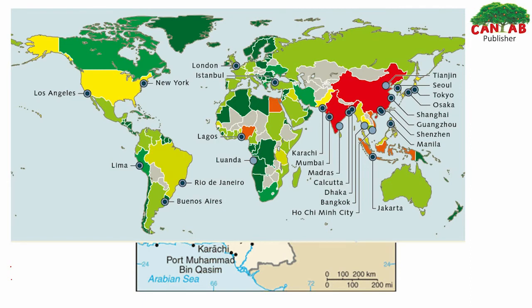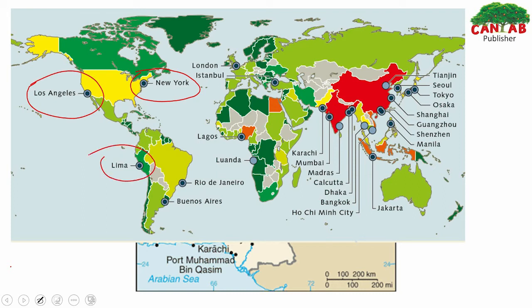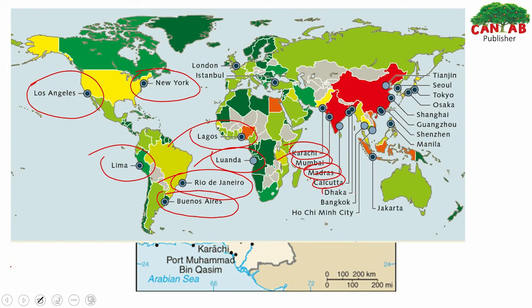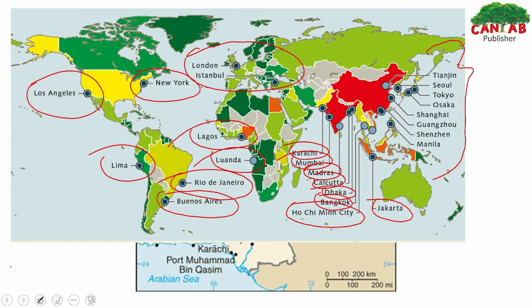On the world map, major ports are depicted: New York Port, Los Angeles Port, Lima Port in South America, Buenos Aires Port, Rio de Janeiro Port, Lagos and Luanda in Africa, Karachi Port in Pakistan, Mumbai and Madras in India, Kolkata, Dhaka in Bangladesh, Bangkok in Thailand, Jakarta in Indonesia, London, Istanbul — all the major coastal area ports of the world are shown here.